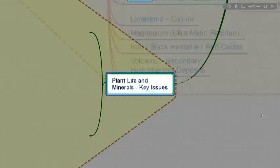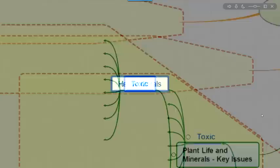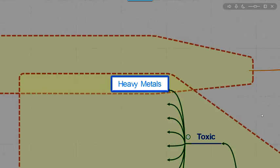So plant life and minerals. What are the key issues we want to consider? Well, toxicity. Specifically, heavy metals. Heavy metals basically have a property in any concentration. They can cause problems with plant growth.